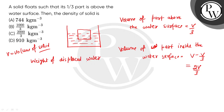The volume of the displaced liquid is 2V/3. So the weight of the displaced water equals 2V/3 multiplied by the density of the liquid, which is 10³ kg/m³, multiplied by the acceleration due to gravity g.